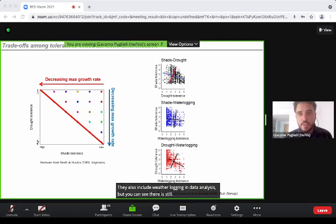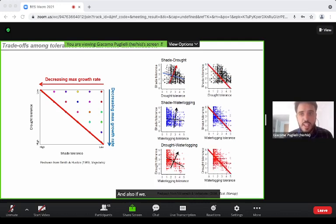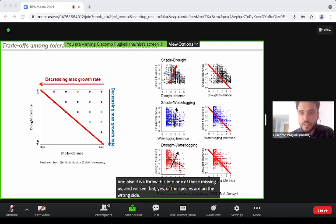As you can see, there is still a lot of scatter in these graphs. If we draw the same diagonal as Smith and Huston, we see that roughly half of the species are on the wrong side of the diagonal.